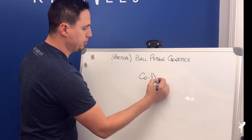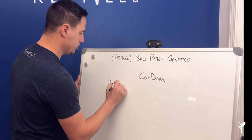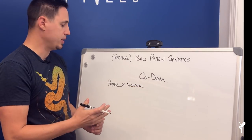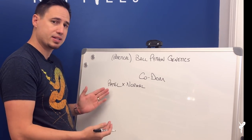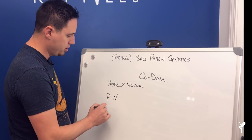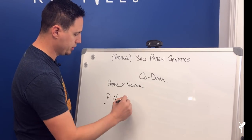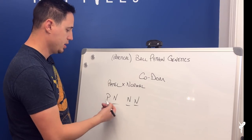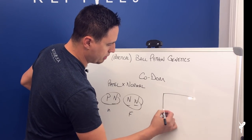First we're going to look at a basic co-dom clutch, as simple as possible. We'll do a pairing like pastel to normal. What you need to know about pastel is that there are two copies on every chromosome of the snake. A pastel has one copy of the pastel gene and one copy of normal. When you breed this animal it will send either the pastel copy or the normal copy into the offspring. The normal only has two copies of the normal gene.